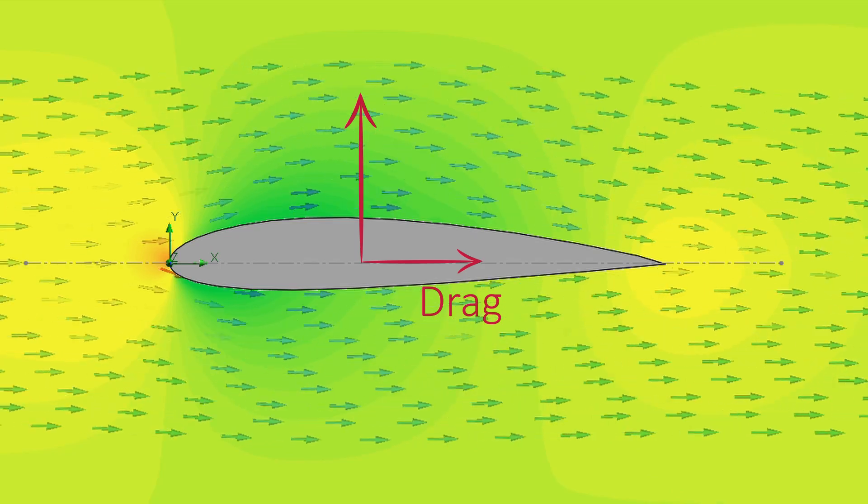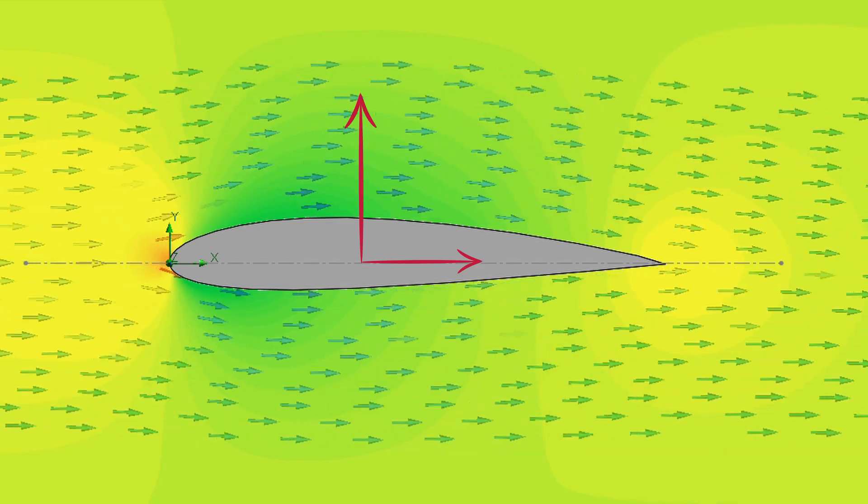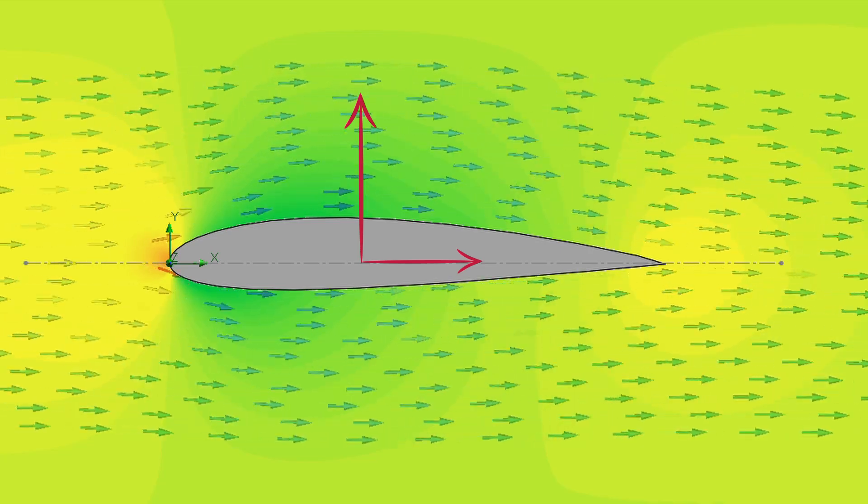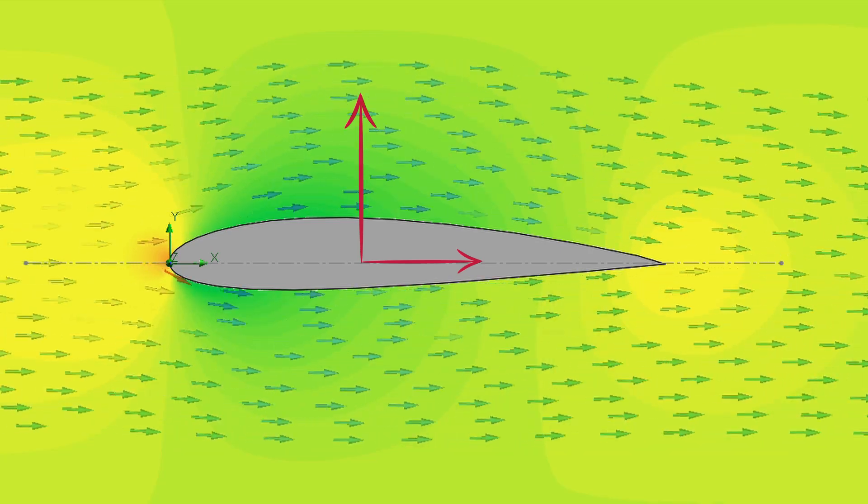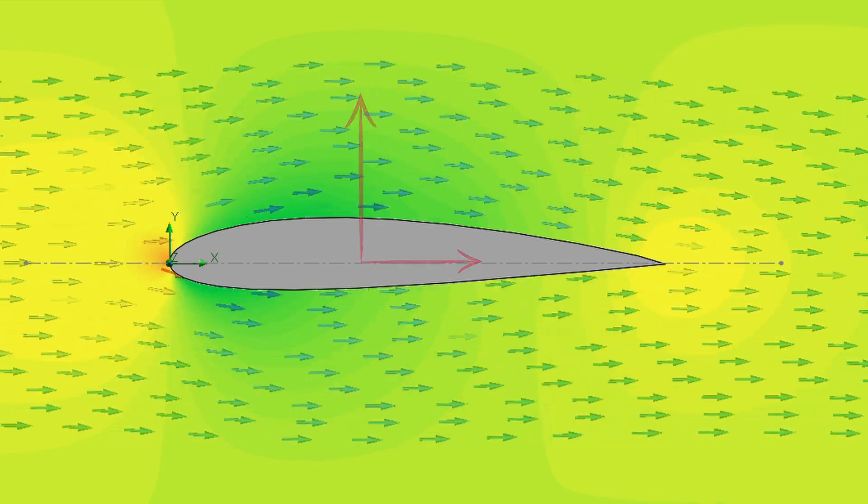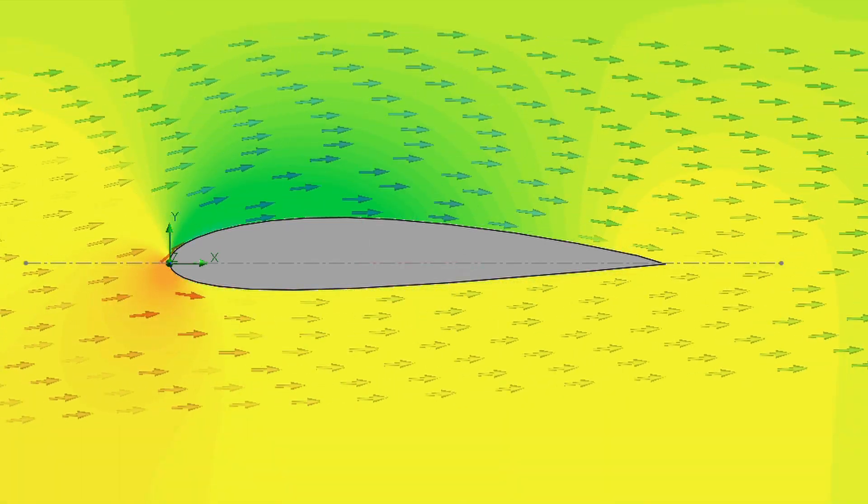The problem is that the lift may be too small in this configuration, because in order to fly horizontally it has to be equal to the weight of the aircraft. A better configuration can be obtained increasing the angle of the airfoil in respect of the flow.